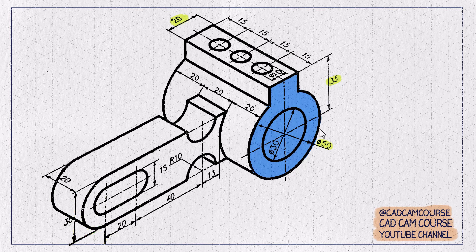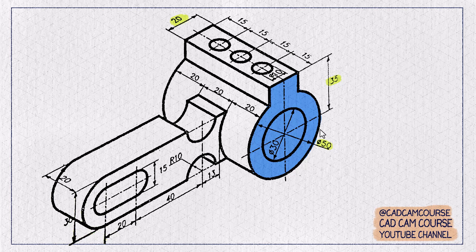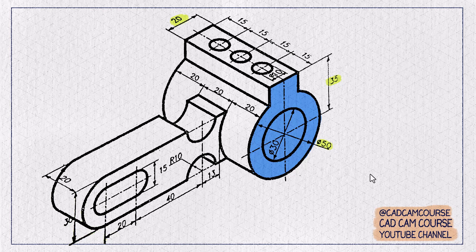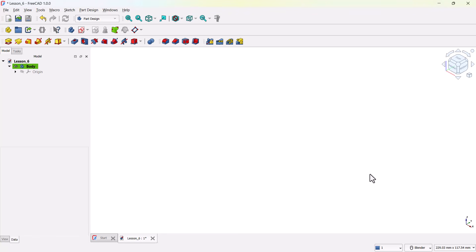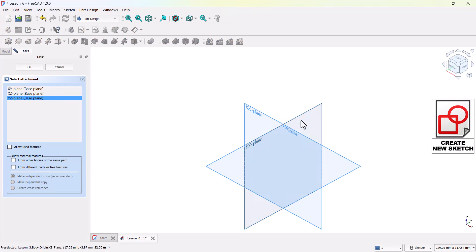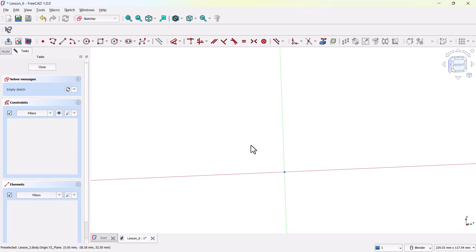While making this cylindrical portion, for time being ignore the hole in the middle and create only the cylinder. First, go to the Part Design Workbench and click Create Sketch. From these three primary planes, select the right plane, that is YZ plane.